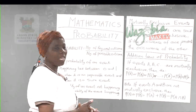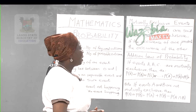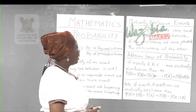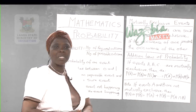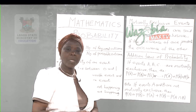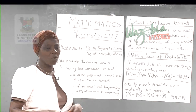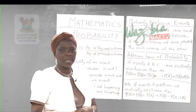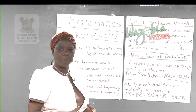Now we go to mutually exclusive events. Two or more events are said to be mutually exclusive when the occurrence of one prevents the occurrence of the other — that is, the two of them cannot happen at the same time.